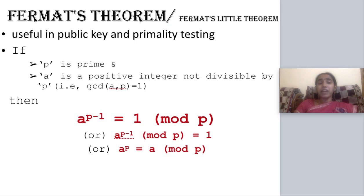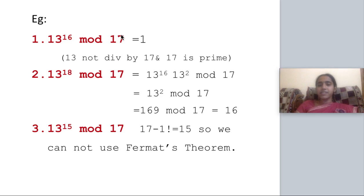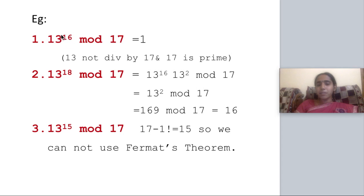Let us see how we can make use of this theorem with an example: 13 power 16 mod 17. Instead of calculating 13 power 16 and then taking modulus 17 — which is a tough task — you can directly apply Fermat's Theorem. Check: 17 is a prime number, and GCD of 13 and 17 is 1, so conditions are satisfied. Here the modulus is 17 and the power is 16, which is P minus 1. So the answer is directly 1.